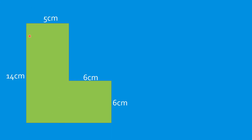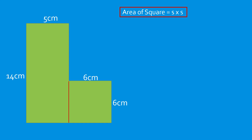Now, here is an example of a composite figure. The measurements are 14 centimeters, 5 centimeters, 6 centimeters, and 6 centimeters. I'm going to divide this figure, giving me a square and a rectangle. The area of the square is 6 times 6, or s times s, which equals 36 square centimeters, since the side is 6 centimeters.